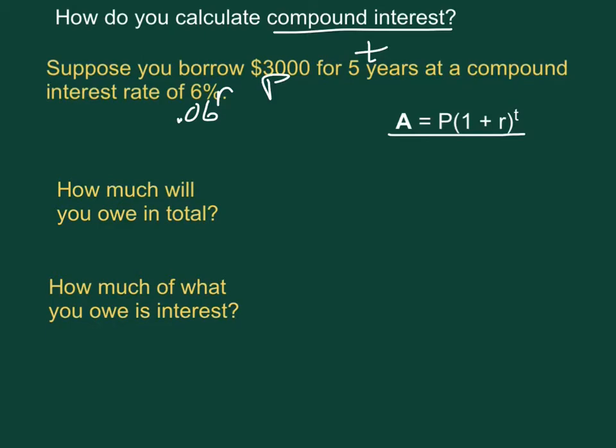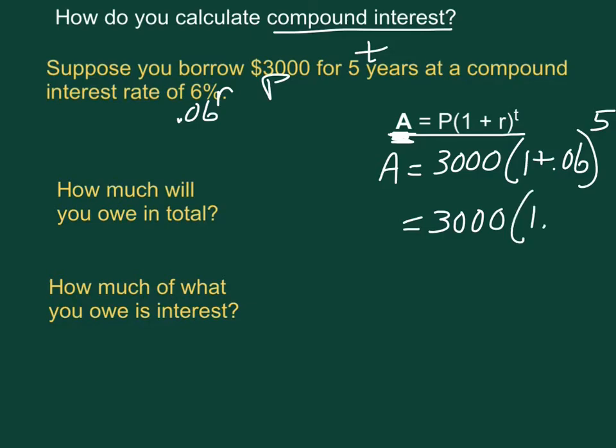Now one of the things you'll notice is this does not start with an I. We are actually finding the total amount that you'll have to pay back at the end because remember you're reinvesting each time. So we want to say A equals 3,000 times 1 plus 0.06 to the fifth power. Let's simplify that a little. 3,000 times 1.06 to the fifth power.